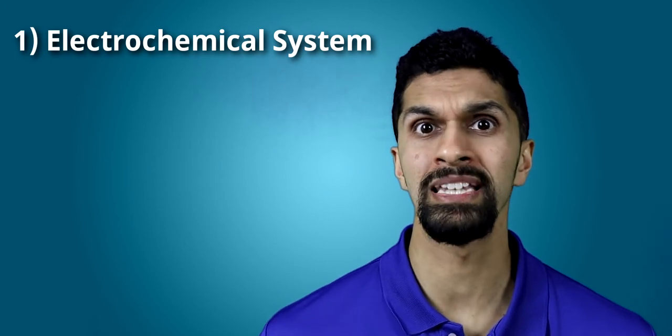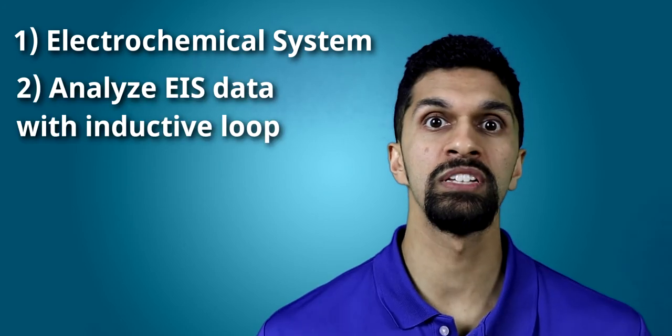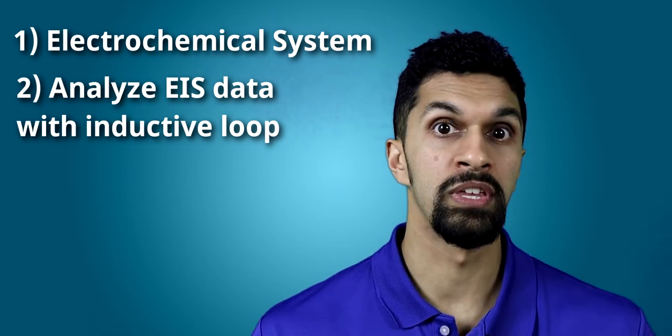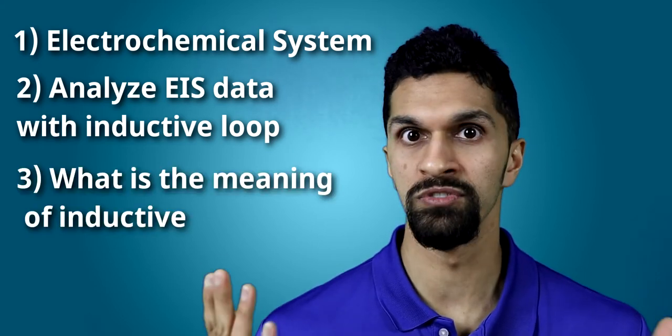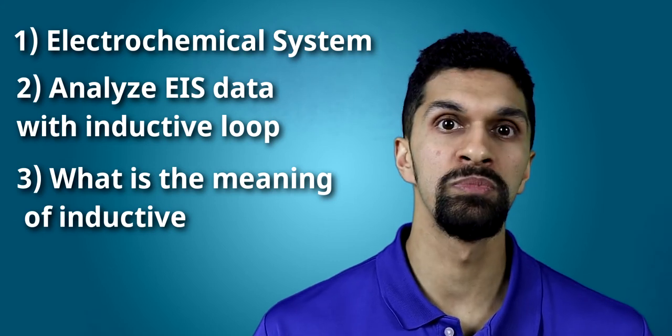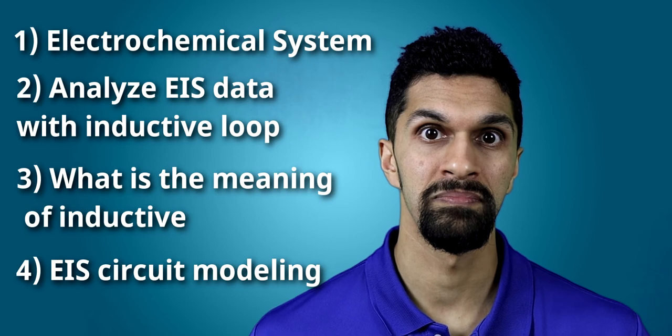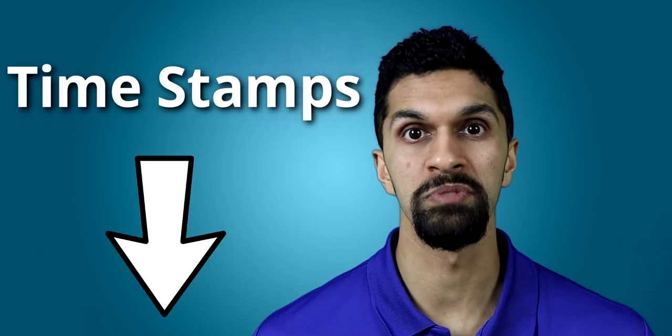We're then going to look directly at the EIS data, specifically looking at Nyquist plots that contain an inductive loop. We're then going to discuss what this inductive loop is and then we're going to move into EIS circuit modeling of the system. Timestamps are in the description below.